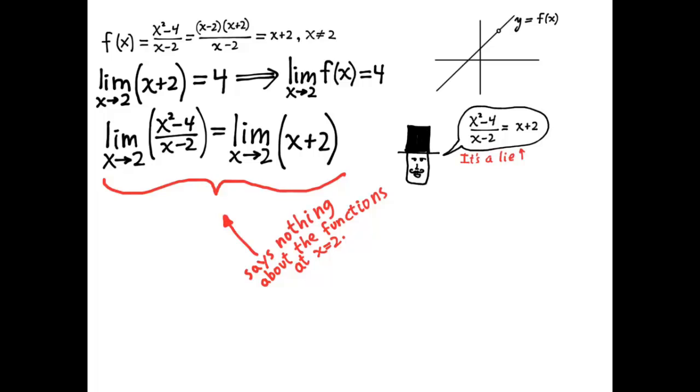It's only talking about what happens in the neighborhood of 2. So now here's an example of how you will use this idea to compute 0 over 0 form limits.